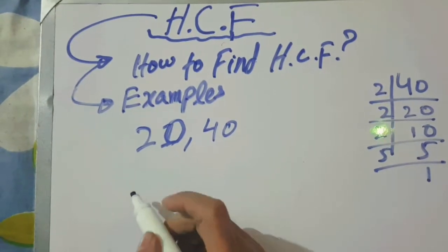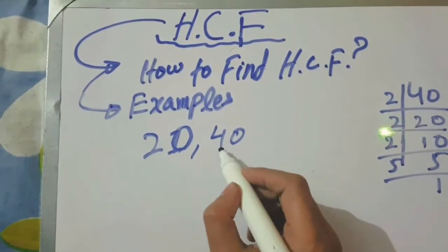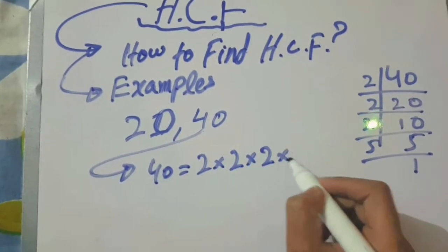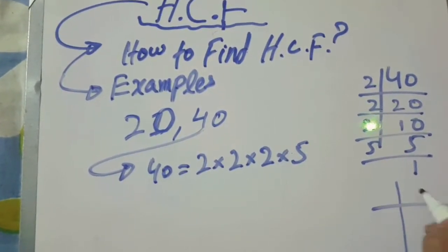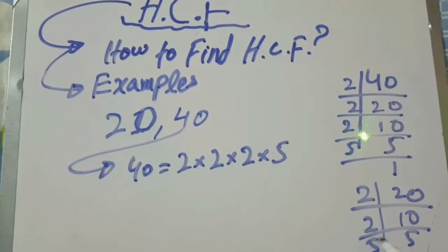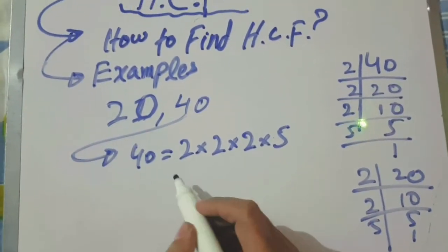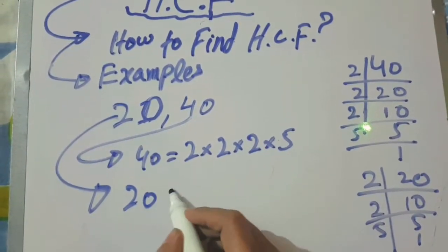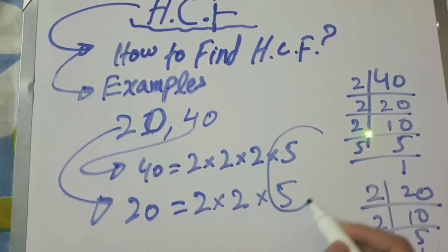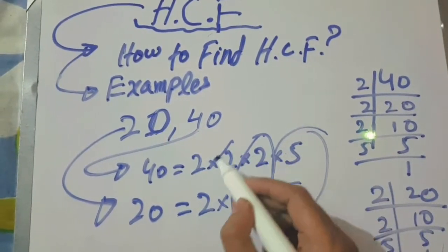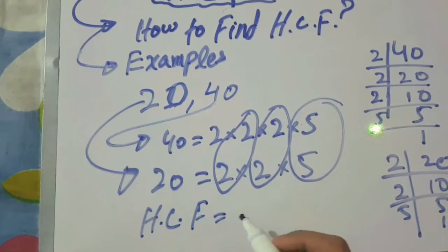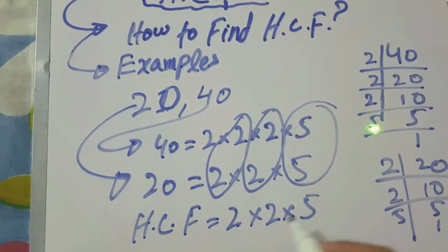Now for 20: the factors are 2 multiplied by 2 multiplied by 2 multiplied by 2, then 5. The factors of 20 are 2 tens are 20, 2 fives are 10, and 5 ones are 5. So factors of 20 are 2 multiplied by 2 multiplied by 5. The common HCF is 2 multiplied by 2 multiplied by 5, giving the answer 20.